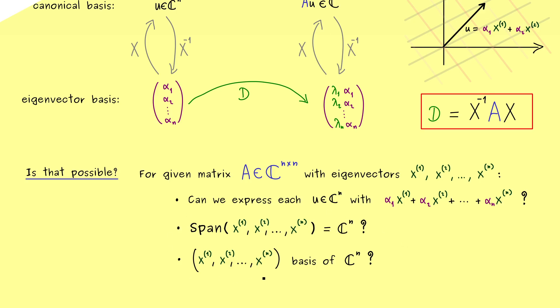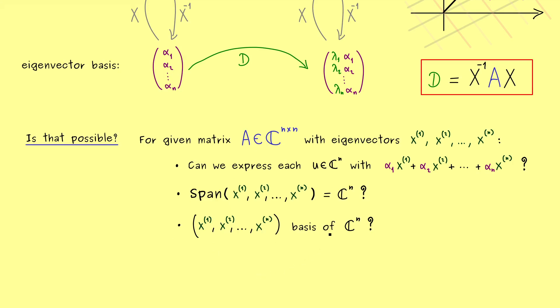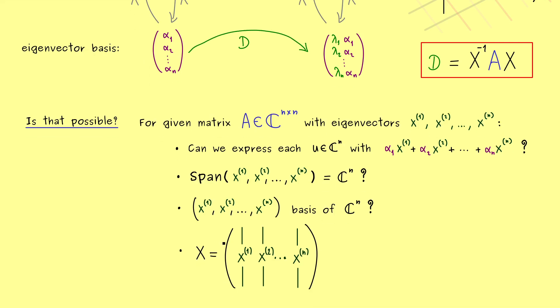But now we also see, if the span here is equal to C^n, these vectors form a basis. Therefore, an equivalent question would be, do these eigenvectors of A form a basis of C^n? This totally makes sense, because otherwise we don't get an alternative grid as a coordinate system.